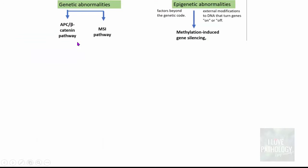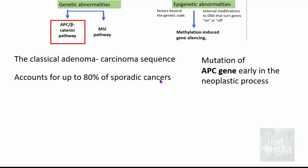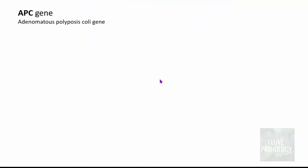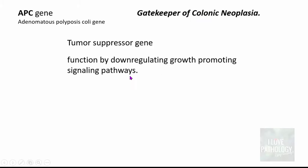The APC or beta-catenin pathway is the classical adenoma-carcinoma sequence, accounting for up to 80% of sporadic cancers, where there is mutation of the APC gene early in the neoplastic process. The APC gene — adenomatous polyposis coli gene — is often referred to as the gatekeeper of colonic neoplasia. It is a tumor suppressor gene which functions by down-regulating growth-promoting signaling pathways, thereby hindering proliferation.